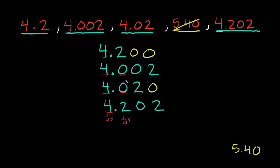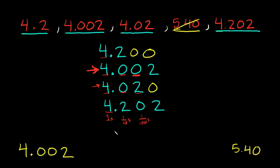Now we just have to pick between those two. We go to the hundredths column to compare them: one has a 0 and the other has a 2. Zero is obviously less than two, so 4.002 is the smallest number. I'll write that down as my smallest number: 4.002.